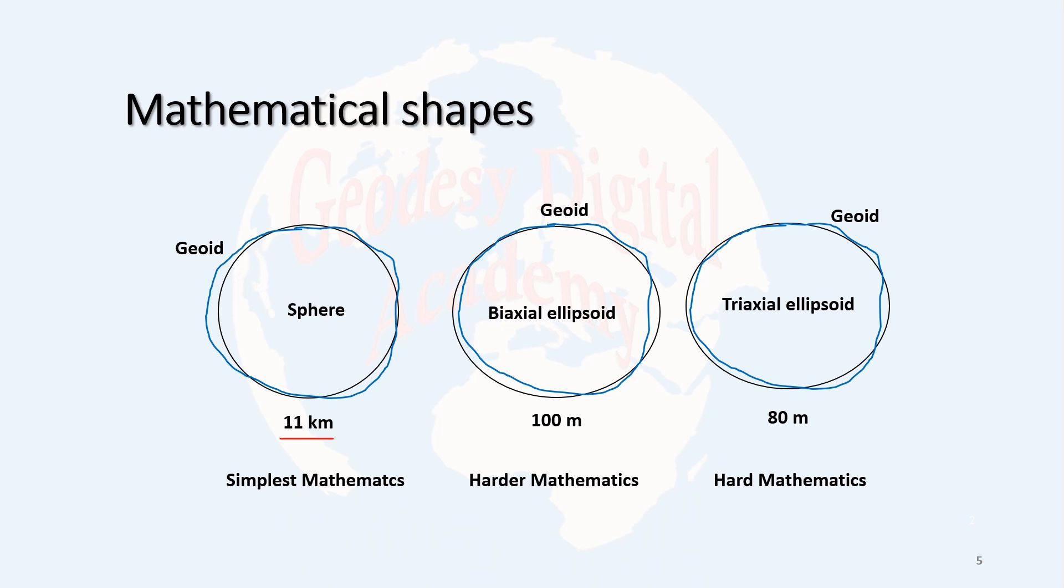To improve this approximation, a biaxial ellipsoid was considered. In that case, they could improve the approximation to 100 meters discrepancy, a huge or significant improvement. The mathematical model is a little bit harder because the ellipsoid is defined by two axes: semi-major axis, shown with A, and semi-minor axis, shown with B. The biaxial ellipsoid of rotation provides a better fit.